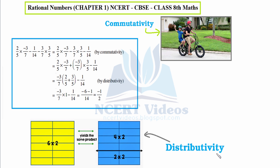Another property is distributivity. For instance, we have a box consisting of 12 partitions, that is 6 × 2 = 12 boxes. The same can be represented as (4 × 2) + (2 × 2) = 8 + 4 = 12. Both figures represent the same number of boxes; the only difference is we have distributed it — 6 × 2 can be written as 4 × 2 plus 2 × 2.